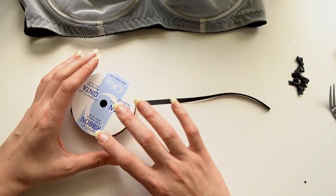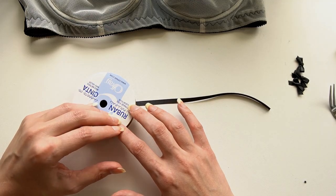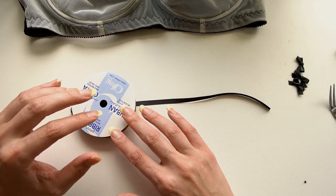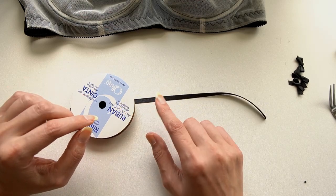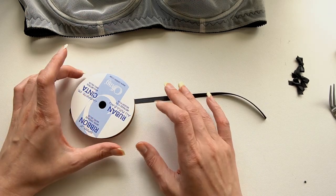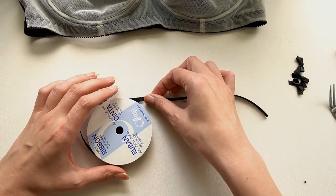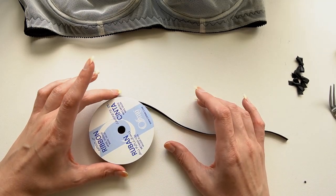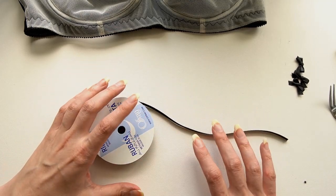When choosing ribbon, I would definitely recommend getting a synthetic fiber ribbon, something that's polyester-based, just because of the way that we're going to be finishing this at the end of the tutorial. The finishing method won't necessarily work with a silk or natural fiber ribbon.